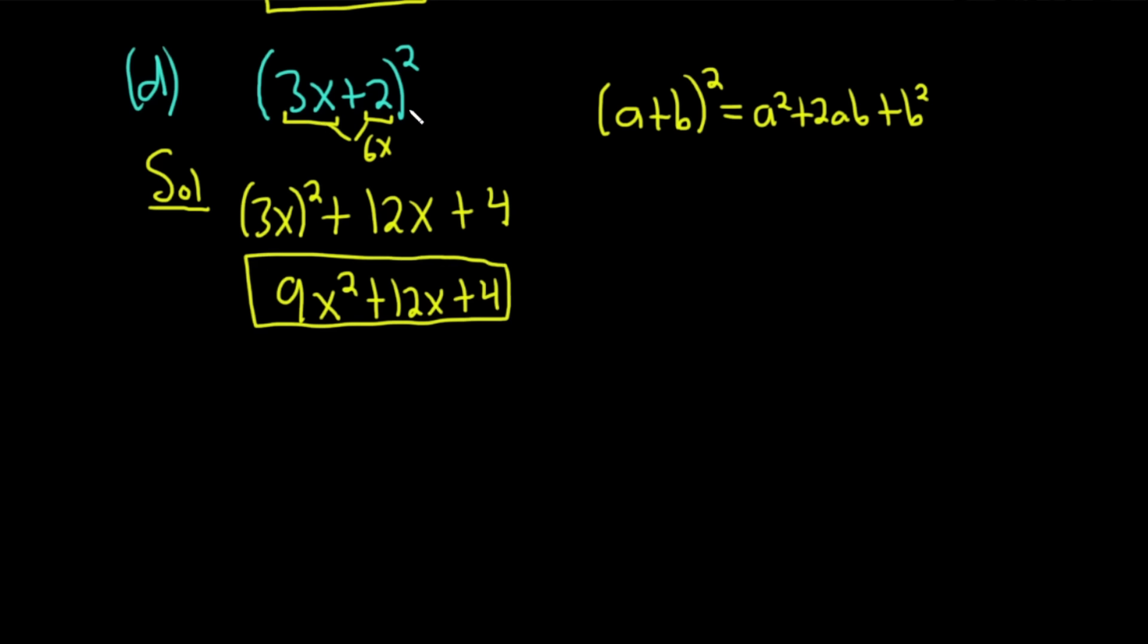So square the first one, multiply them and double them. 2 times 3x is 6x times 2 is 12x. Square the last. Let me just show you another example right away so that you can get better at this.